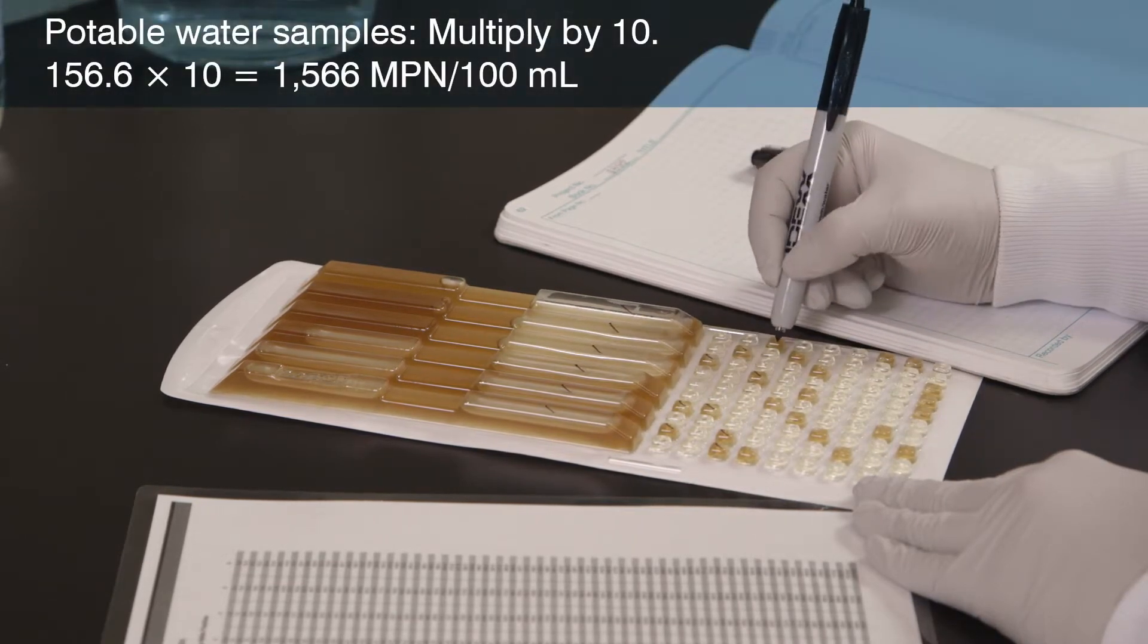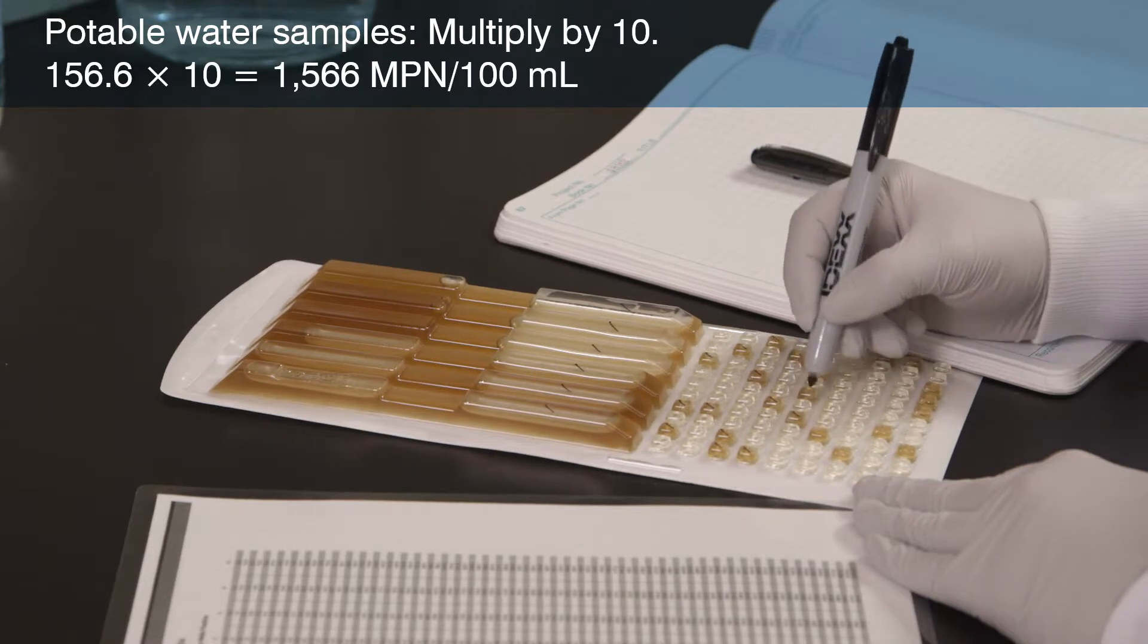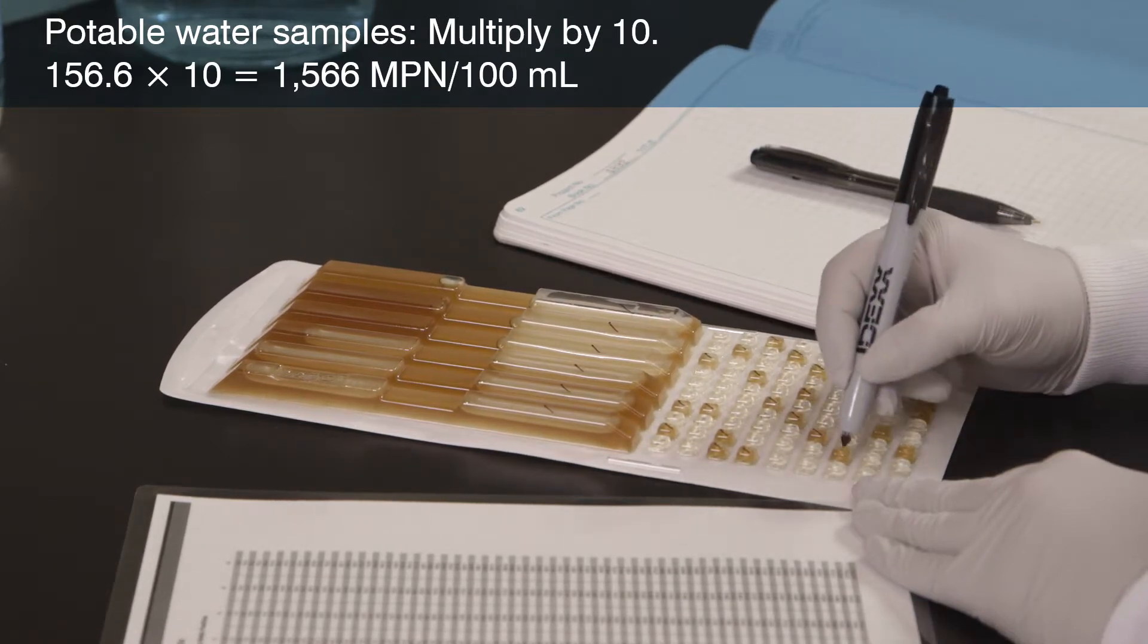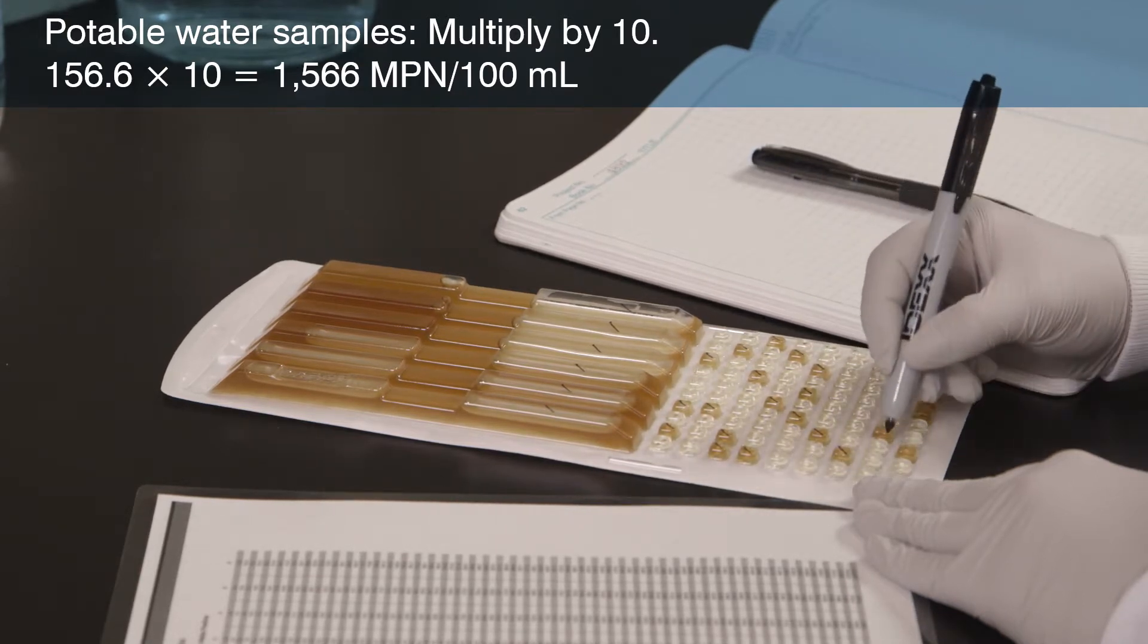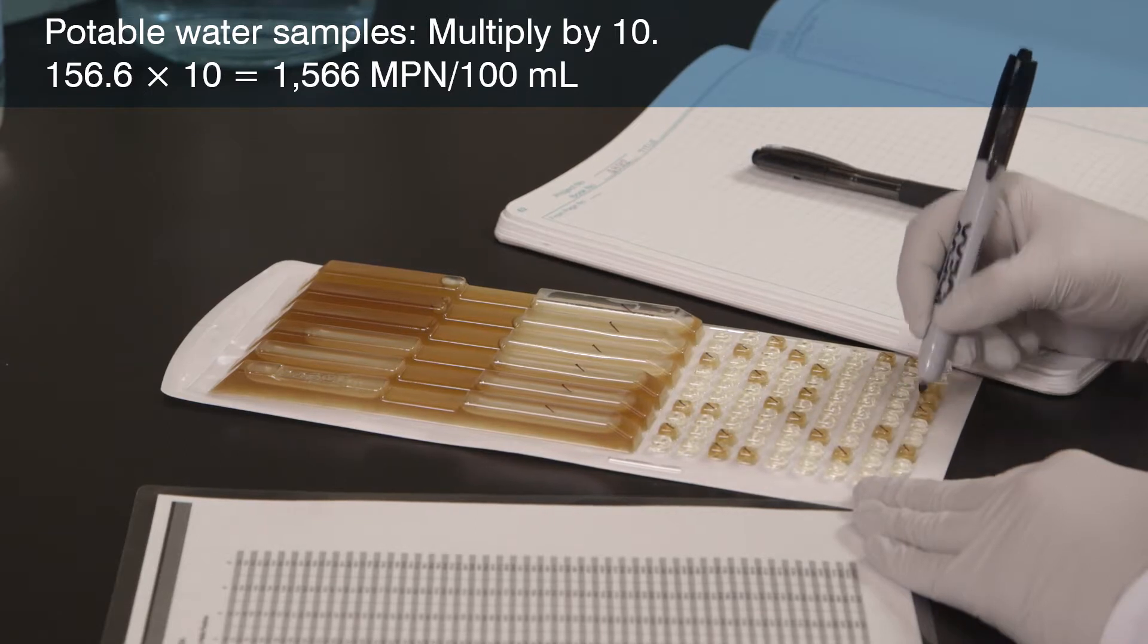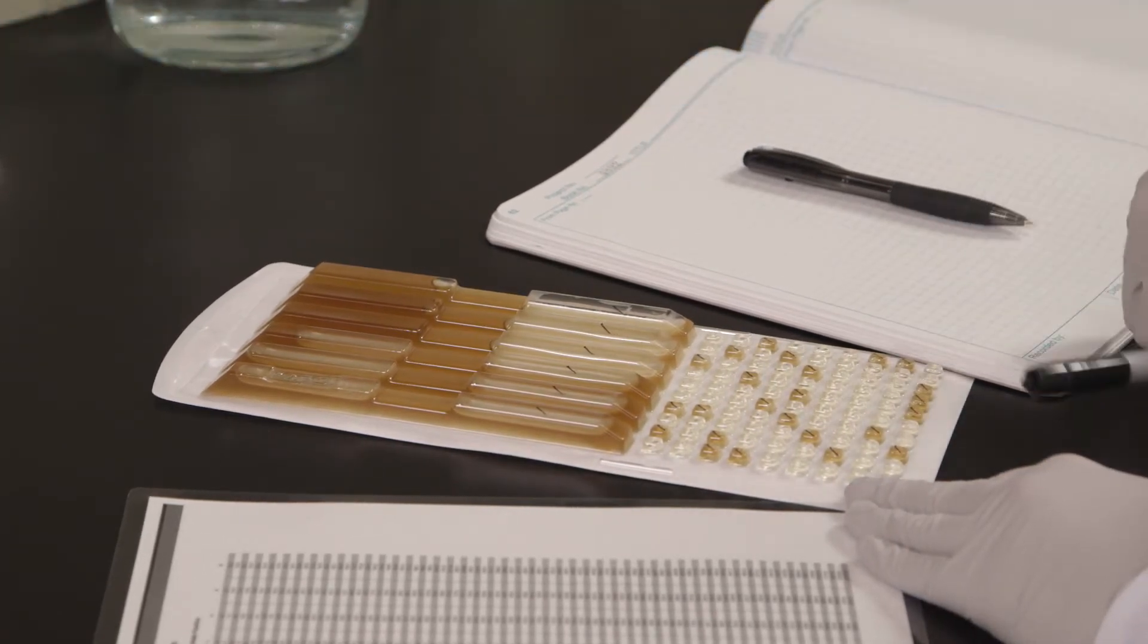For potable water samples, remember to multiply the MPN number by 10 because you're using a diluted sample. The most probable number for this potable water example is 156.6 multiplied by a dilution factor of 10 to achieve a final MPN of 1,566 per 100 ml.